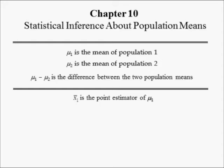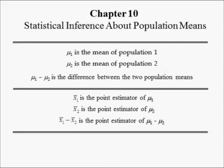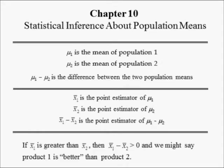Sample mean x-bar 1 is the point estimator of mu1. Sample mean x-bar 2 is the point estimator of mu2. x-bar 1 minus x-bar 2 is the point estimator of mu1 minus mu2. If x-bar 1 is greater than x-bar 2, then the difference is positive, which would suggest that Brand A lipstick is probably better than Brand B.